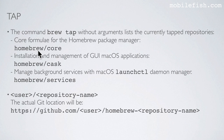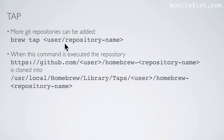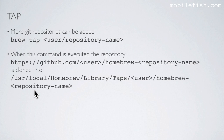If we look at a tap repository, this is the user and this is the repository name. The actual git location will be https://github.com/[user]/homebrew-[repository-name]. More git repositories can be added by typing this command. When this command is executed, the repository at https://github.com/[user]/homebrew-[repository-name] is cloned into this macOS path.